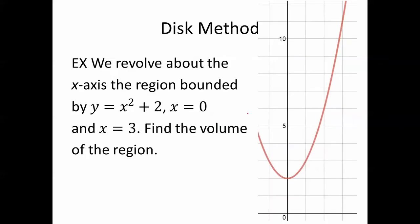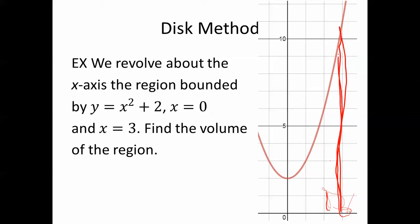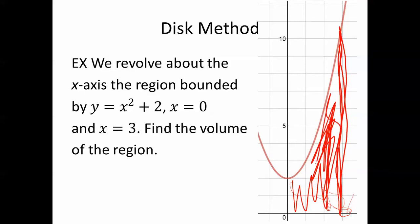We revolve about the x-axis the region bounded by y equals x squared plus 2, x equals 0, and x equals 3. Find the volume of the region. x squared plus 2 at x equals 3 gives us 3 squared plus 2, which is 11. So we're taking this region and revolving it about the x-axis.